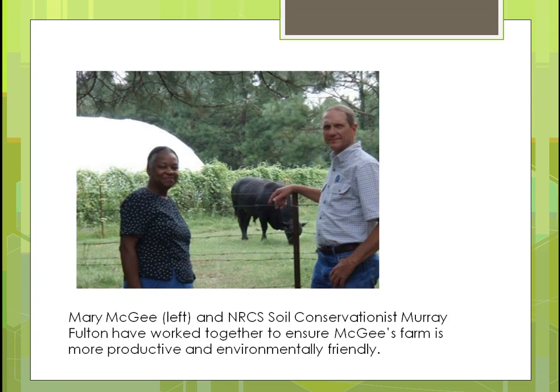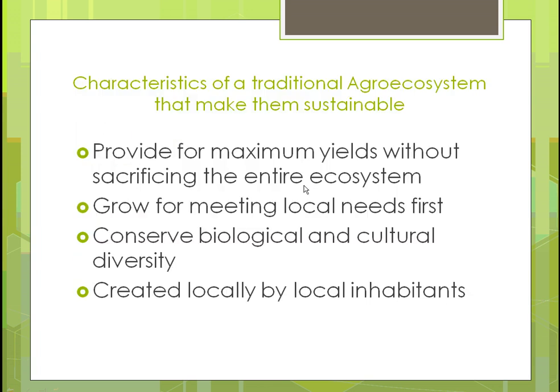Here's an example of a soil conservationist working with a woman trying to become more environmentally friendly. You can see right away she has a hoop house — she's extended her growing season. She has an animal in a pasture, which is a really sustainable approach. The conservationist is helping her improve what she's doing. It's probably a small organic farm in the southeast of the United States.